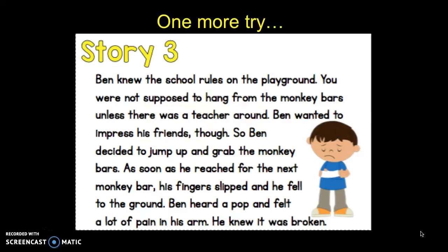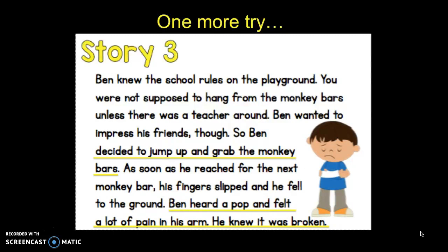Alright, I bet you guys are doing some really good thinking. Before we check ourselves, let's think about some clues from the story. One clue was that Ben decided to jump up and grab the monkey bars even though he knew that was against the rule. Also, he heard that big pop and felt pain in his arm, so he knew it was broken. Well, I definitely learned a lesson from him: always follow the rules. Is that what you and your buddy thought too? It's definitely an important lesson — I hope Ben learned it.